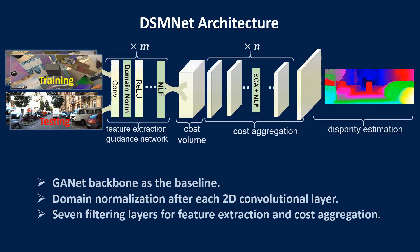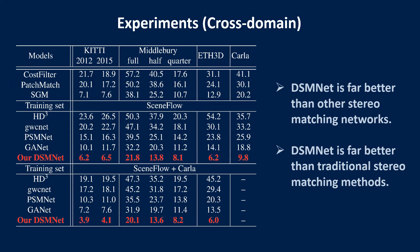This is the network architecture. We use the domain normalization layer to replace the original batch normalization, and use several non-local filtering layers for feature extraction. The error rate results evaluated on different datasets in a cross-domain setting show that our DSMNet is far better than any other zero-shot stereo matching networks for cross-domain evaluation. It also outperforms traditional zero-shot methods, including the widely used SGM.